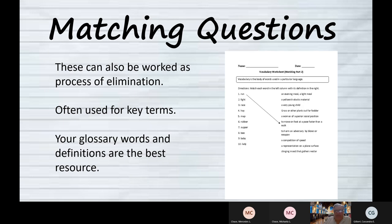Now, matching questions, which you may see on some quizzes. I like these because it's a way to cover five or six things with one question. If a student knows them, they can get all six points. But if you mess up one, you automatically mess up two because you've tied up two choices with mistakes. So let's figure out a process for getting through a series of matching questions.